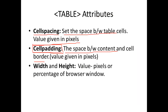Width and height are attributes of the table tag. The value can be given in pixels or as a percentage of the browser window. These attributes control the overall width and height of the table.